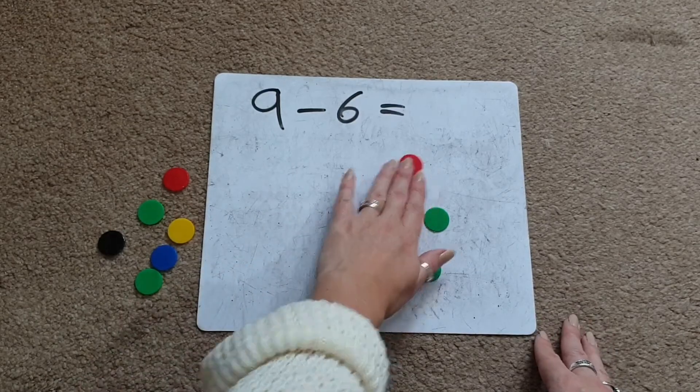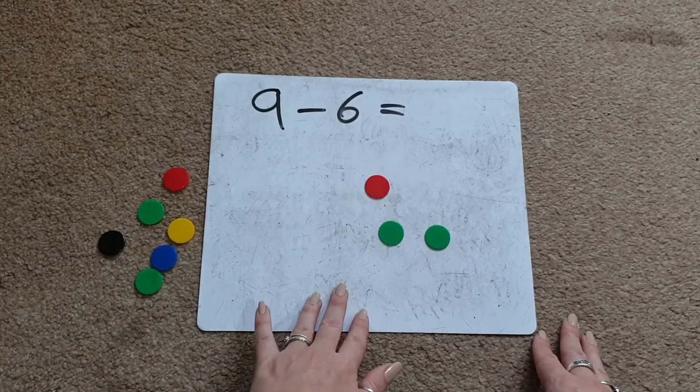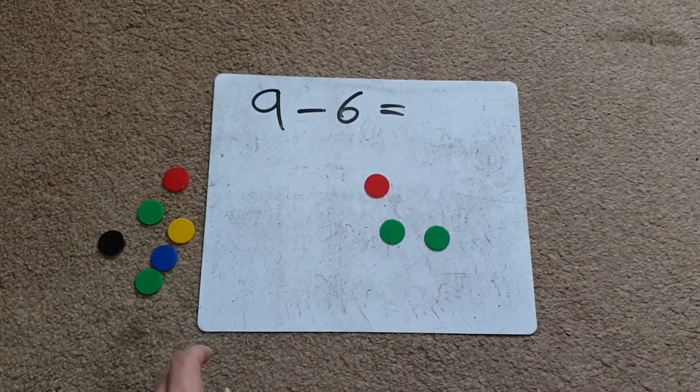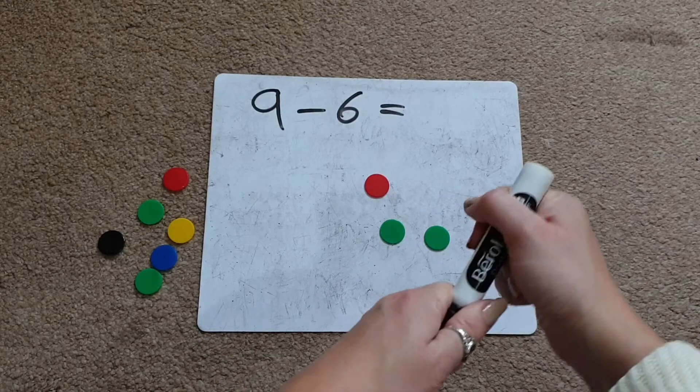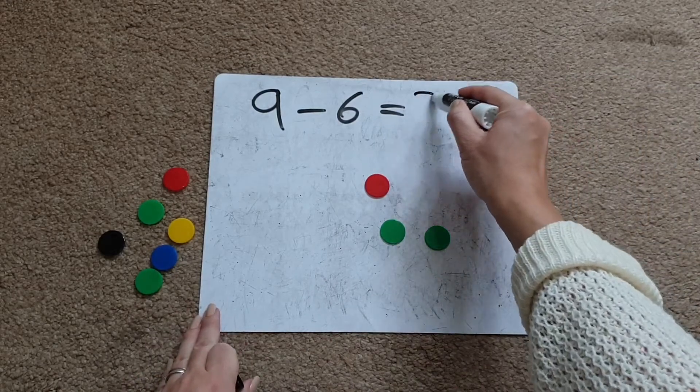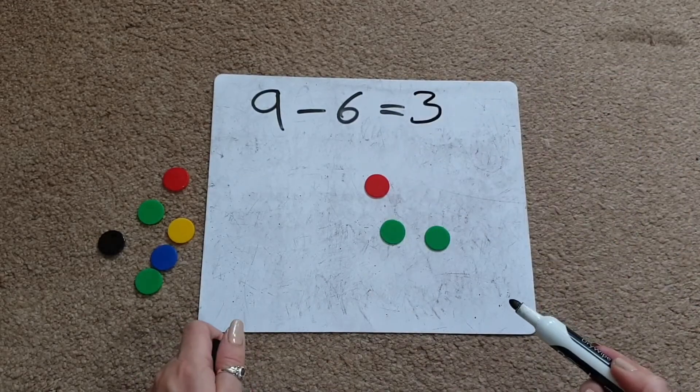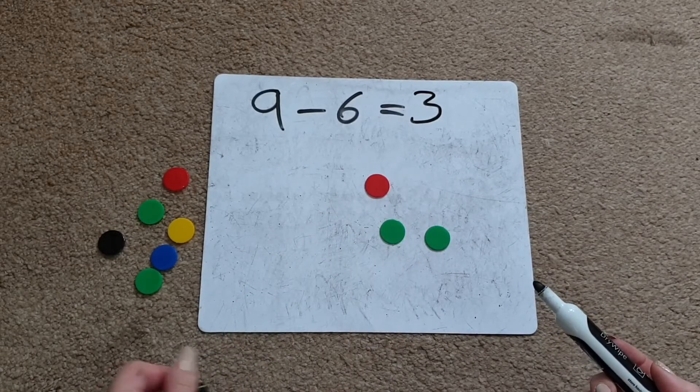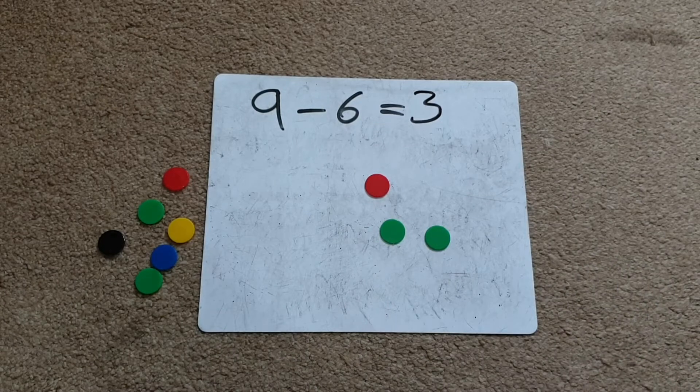And then I'm going to ask your children to count how many objects you have left. 1, 2, 3. And then that is our answer. So then we can write in the answer at the end of the number sentence to show that we know their answer. And again, I'd be getting them to double check that they've got the right amount and that they're counting their answer correctly.